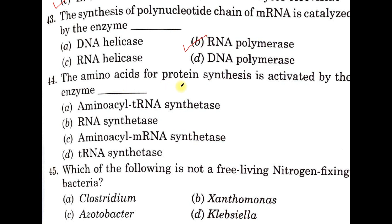Question number 44. The amino acids for protein synthesis are activated by the enzyme A: Aminoacyl-tRNA synthetase, B: RNA synthetase, C: Aminoacyl-mRNA synthetase, D: tRNA synthetase. The correct option is A, Aminoacyl-tRNA synthetase. It is found in the cytoplasm, also called tRNA ligase, and it attaches the appropriate amino acid onto the corresponding transfer RNA.